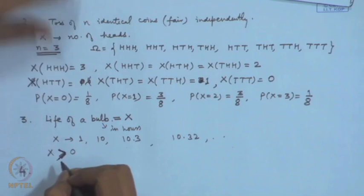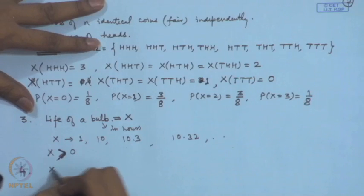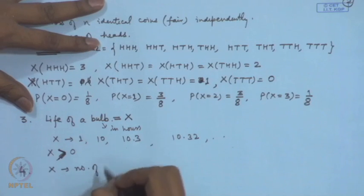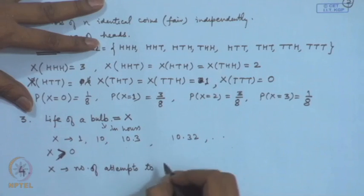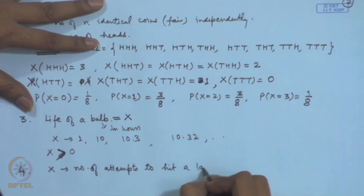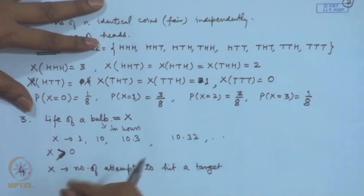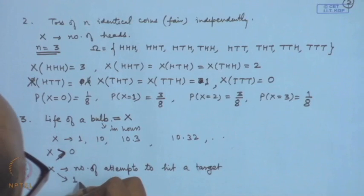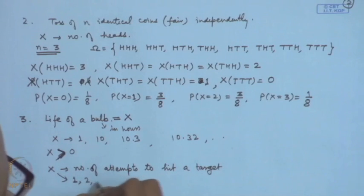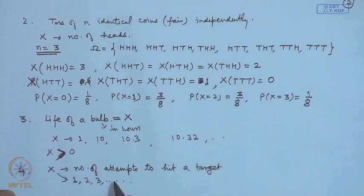There is another case: consider X as the number of attempts to hit a target. You make the first attempt and may hit; in the second attempt you may hit; and so on. The values that X will take are 1, 2, 3, and so on — these are countably infinite number of values.